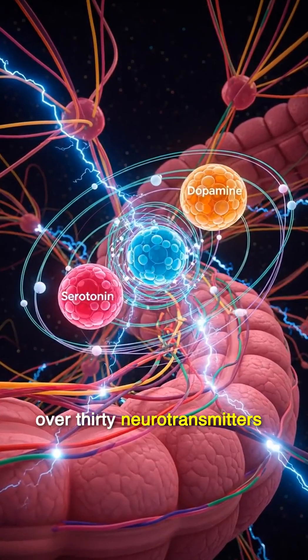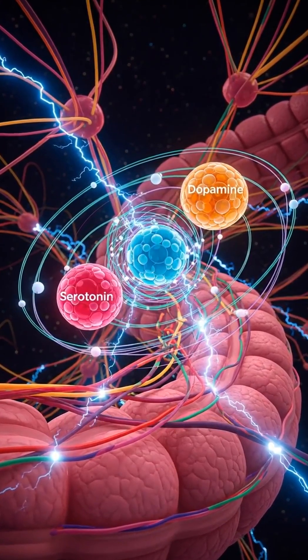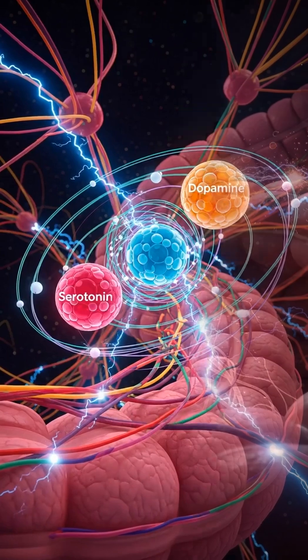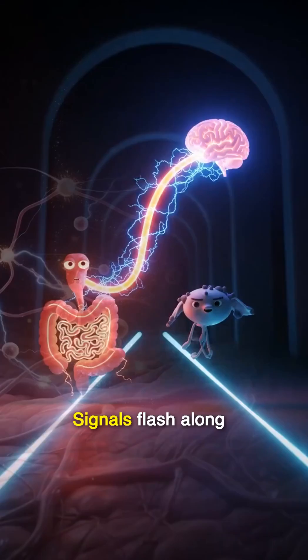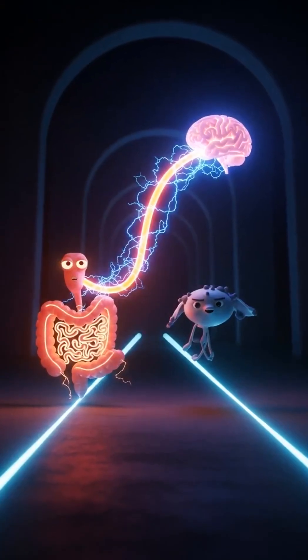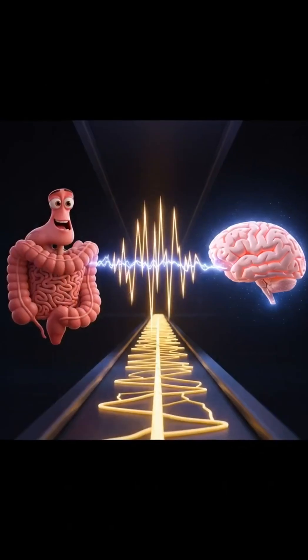The gut produces over 30 neurotransmitters like serotonin, which shapes moods, sleep, and appetite. Signals flash along the vagus nerve, connecting gut and brain in constant two-way communication.